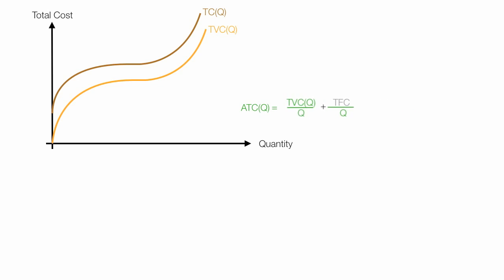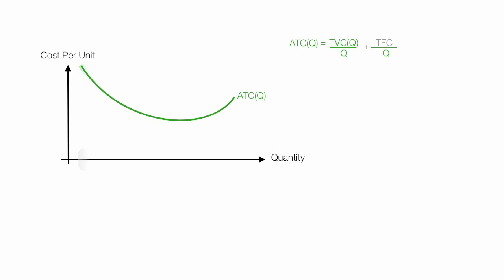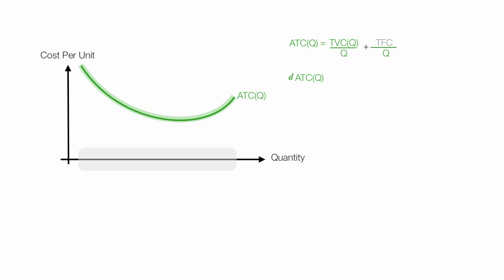I drew back in the average total cost curve. What happens to average total cost as quantity changes? As quantity changes, how does average total cost change? That little delta — or triangle — represents change. If I take d(ATC), the change in average total cost divided by the change in quantity, that's the first derivative. That's what I'm trying to show: how does average total cost change when quantity changes.